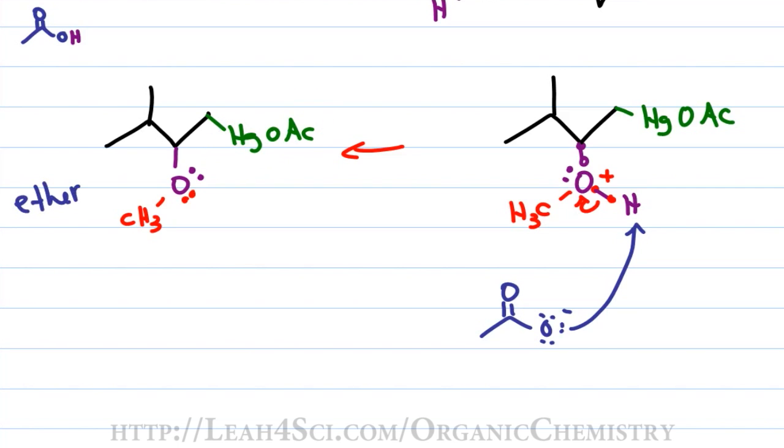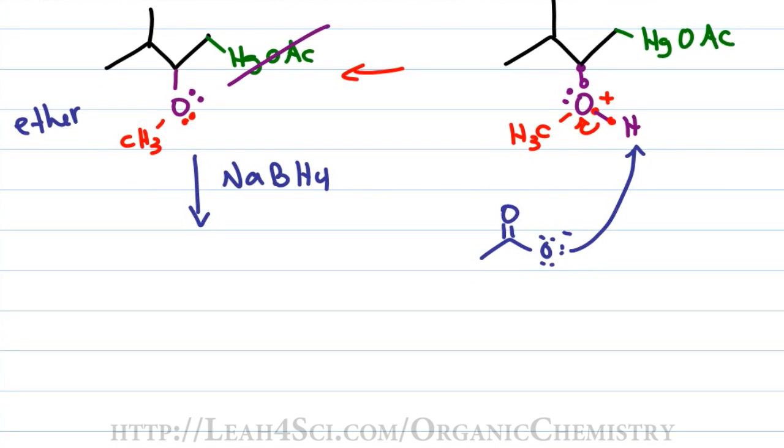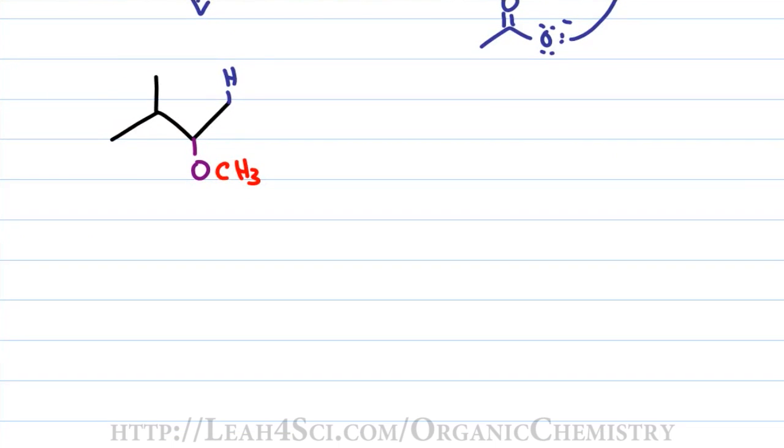But we still have to get rid of that HgOac so we'll just show the arrow for the next step using the reducing agent sodium borohydride. Without showing the mechanism we simply remove the HgOac and substitute a hydride in its place. This gives me a final product with a methoxy group on the secondary carbon and the hydride or hydrogen atom on the primary carbon. Since this molecule has an ROR this molecule is an ether which is different from the product of oxymercuration which is simply an alcohol.